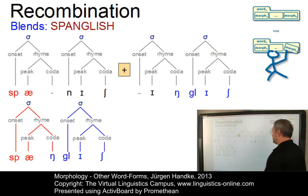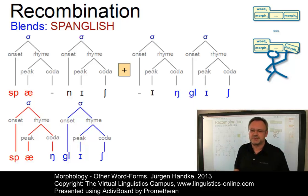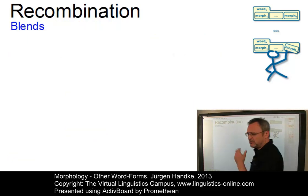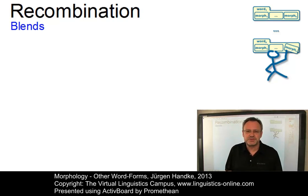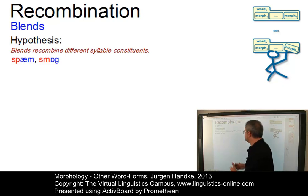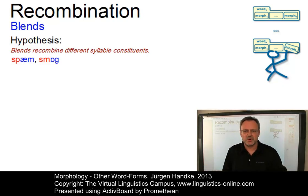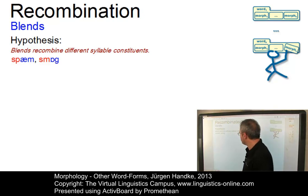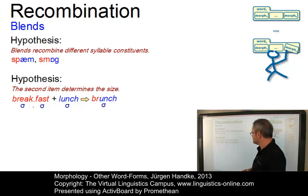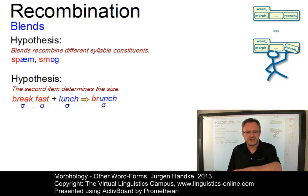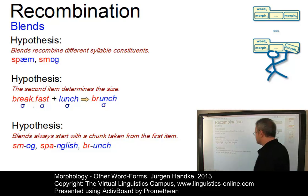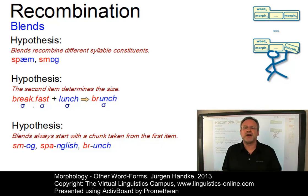From the discussion of our three blends, we can derive the following principles that apply to the operation of recombination. The first hypothesis is that blends recombine different syllable constituents — onset plus rhyme, onset and peak plus coda, and so on, as we saw in 'smog' and 'Spanglish'. The second hypothesis is that the second item determines the size, as we saw in 'breakfast' plus 'lunch' yielding one syllable. The third and most general observation is that blends always start with a chunk from item one and end with a chunk from item two.